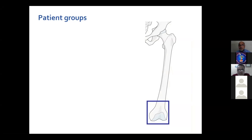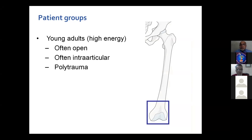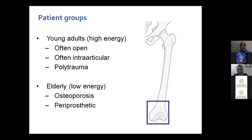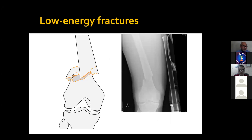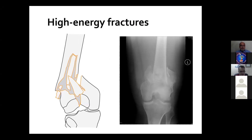We have two groups of patients who suffer such fractures. We have young adult patients who get high energy trauma — it is often an open fracture, often an intra-articular fracture, and often combined with polytrauma with other elements of injury. Then there are the elderly low-energy group who have osteoporotic bone and who may have a periprosthetic fracture. This is an example of the low energy fractures, and this is an example of the high energy fractures.